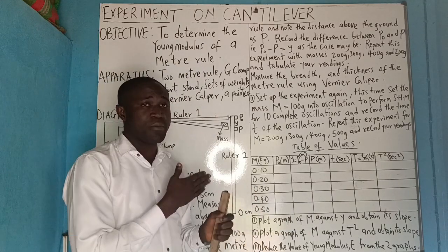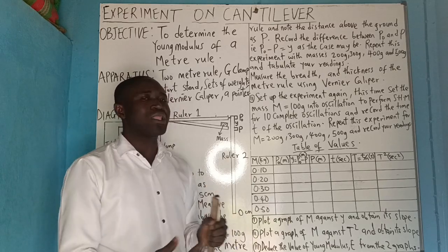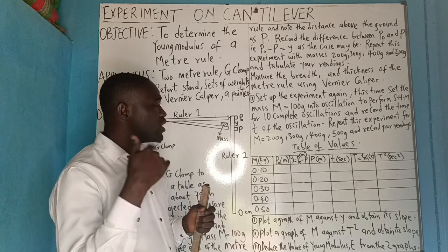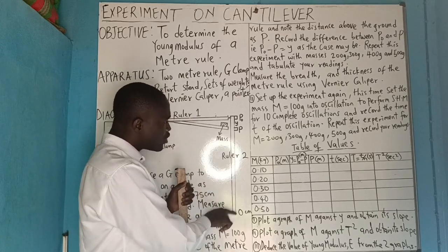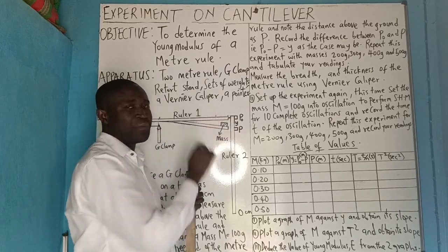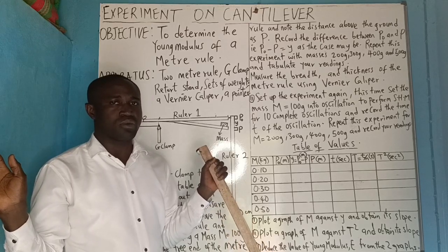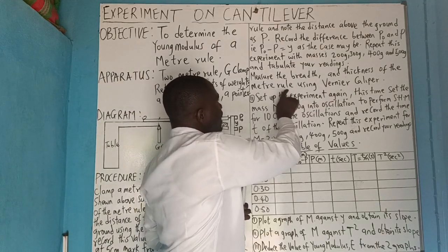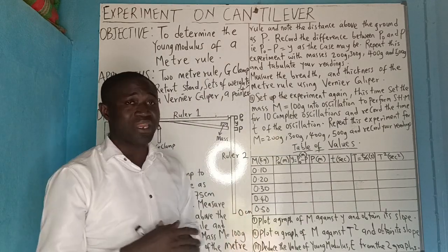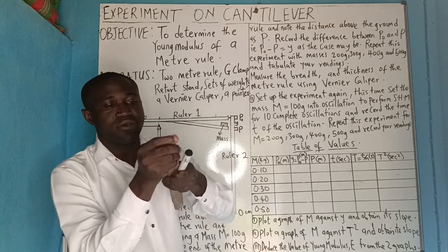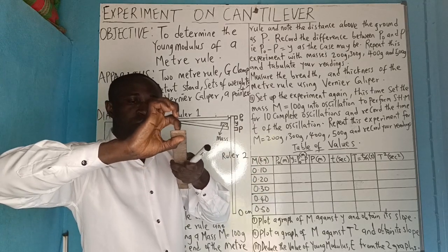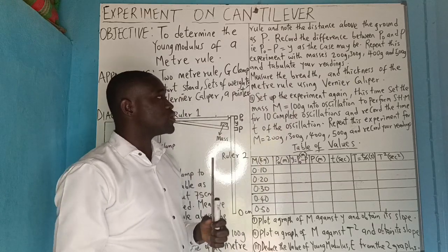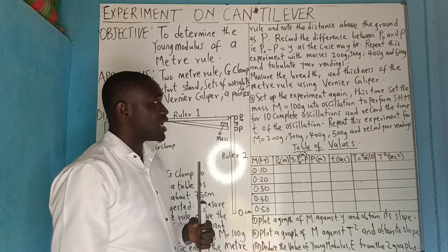The essence of performing this experiment here is to see how we can do it efficiently without stressing ourselves setting up apparatus. The only critical measurement is from zero to P₀. Once you note P₀, the rest is sorted. Also measure the breadth of the meter rule (across the flat face) and the thickness (top to bottom) using a vernier caliper.